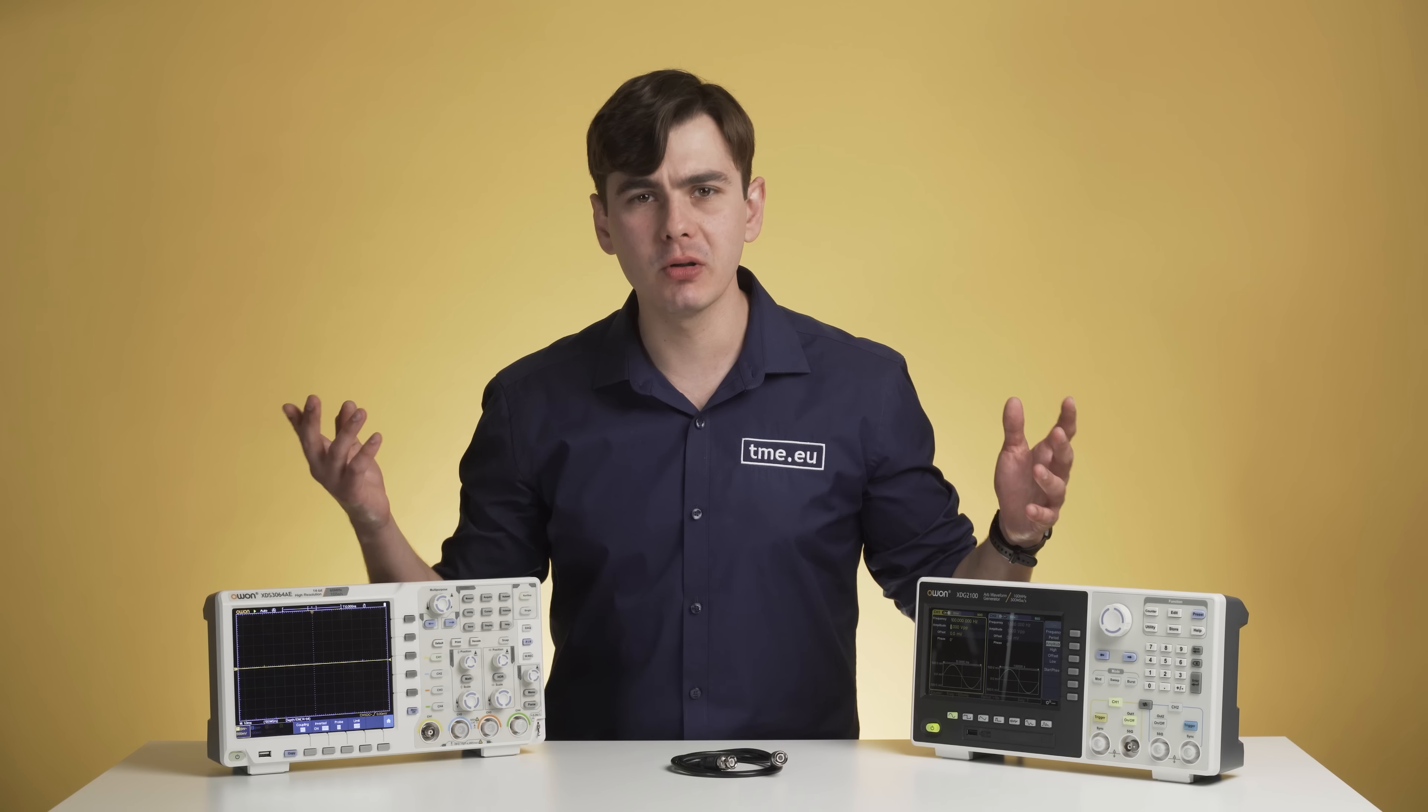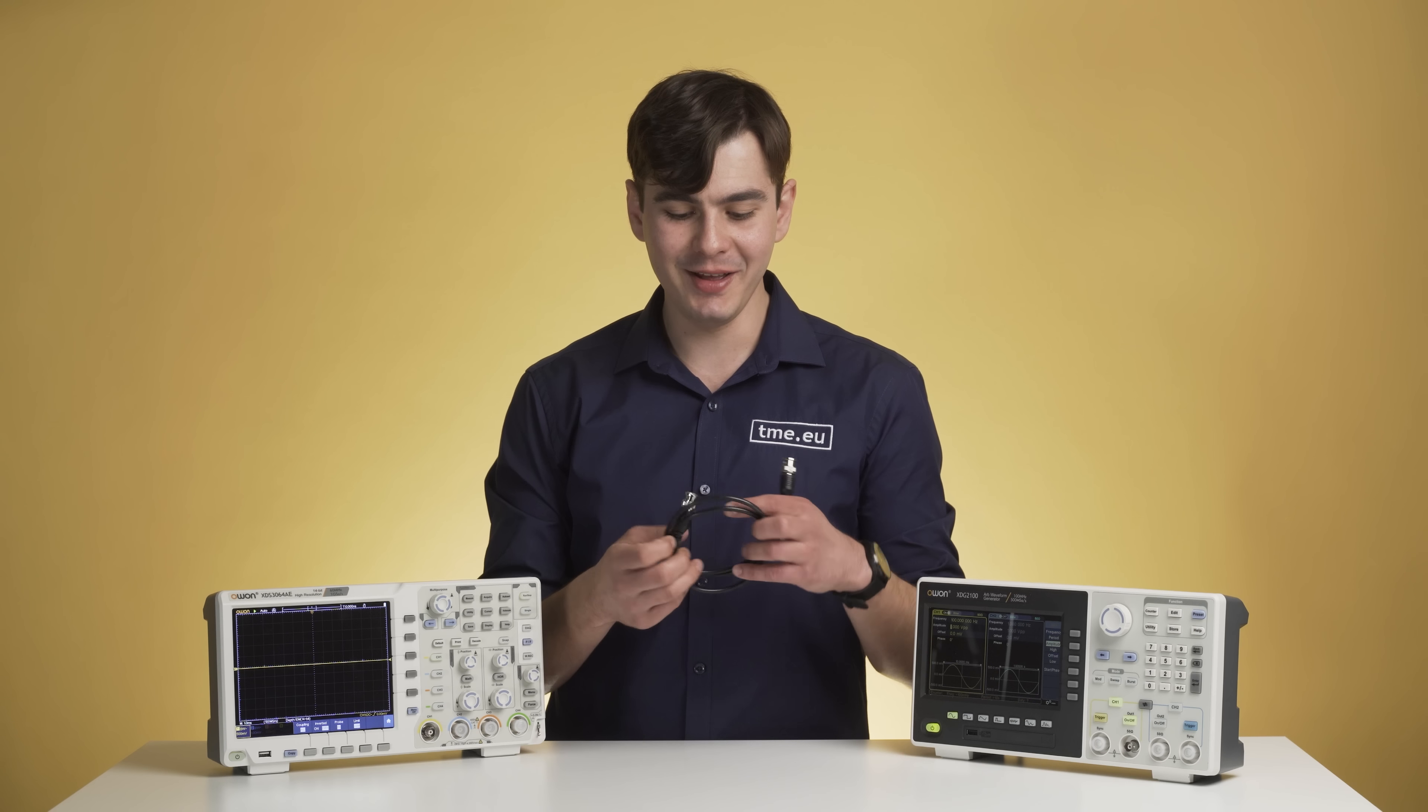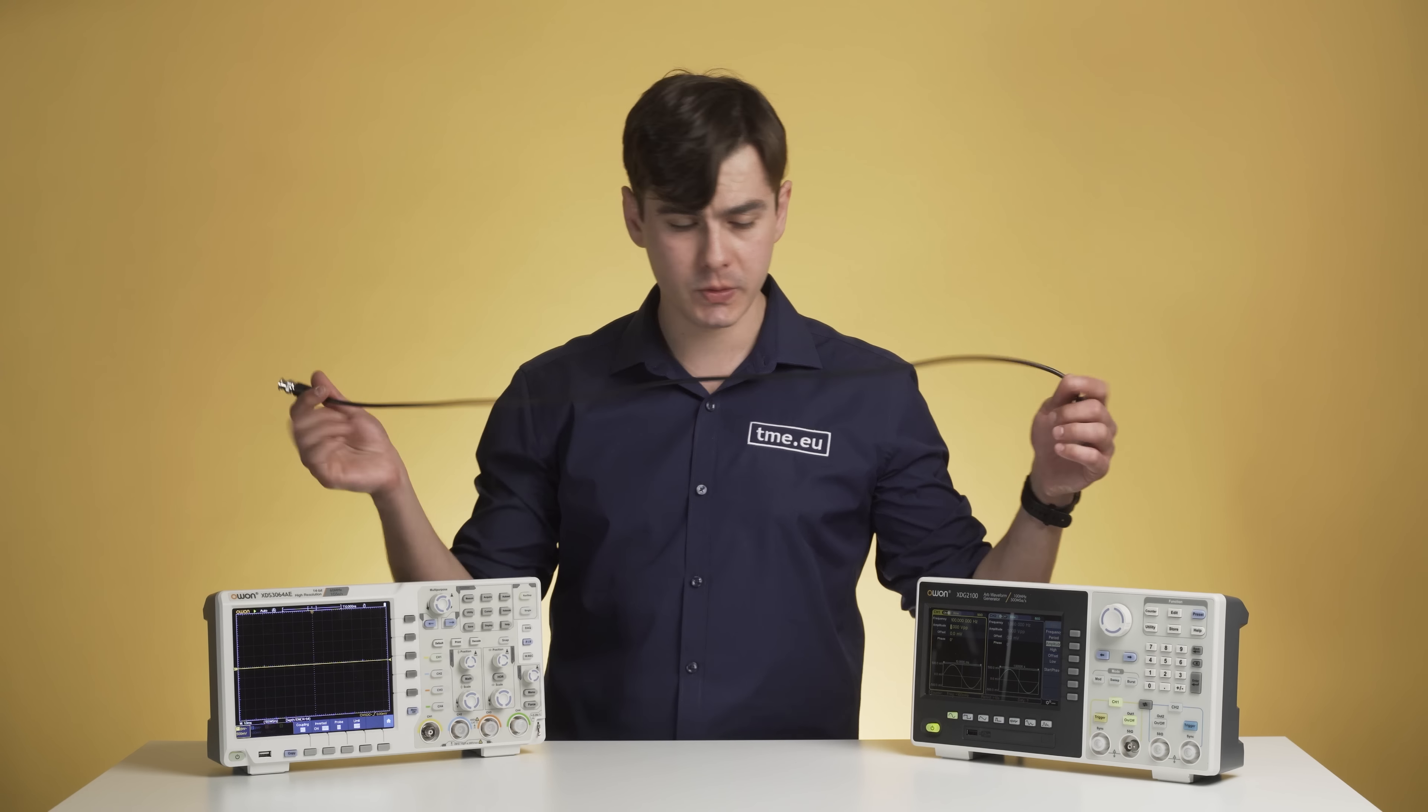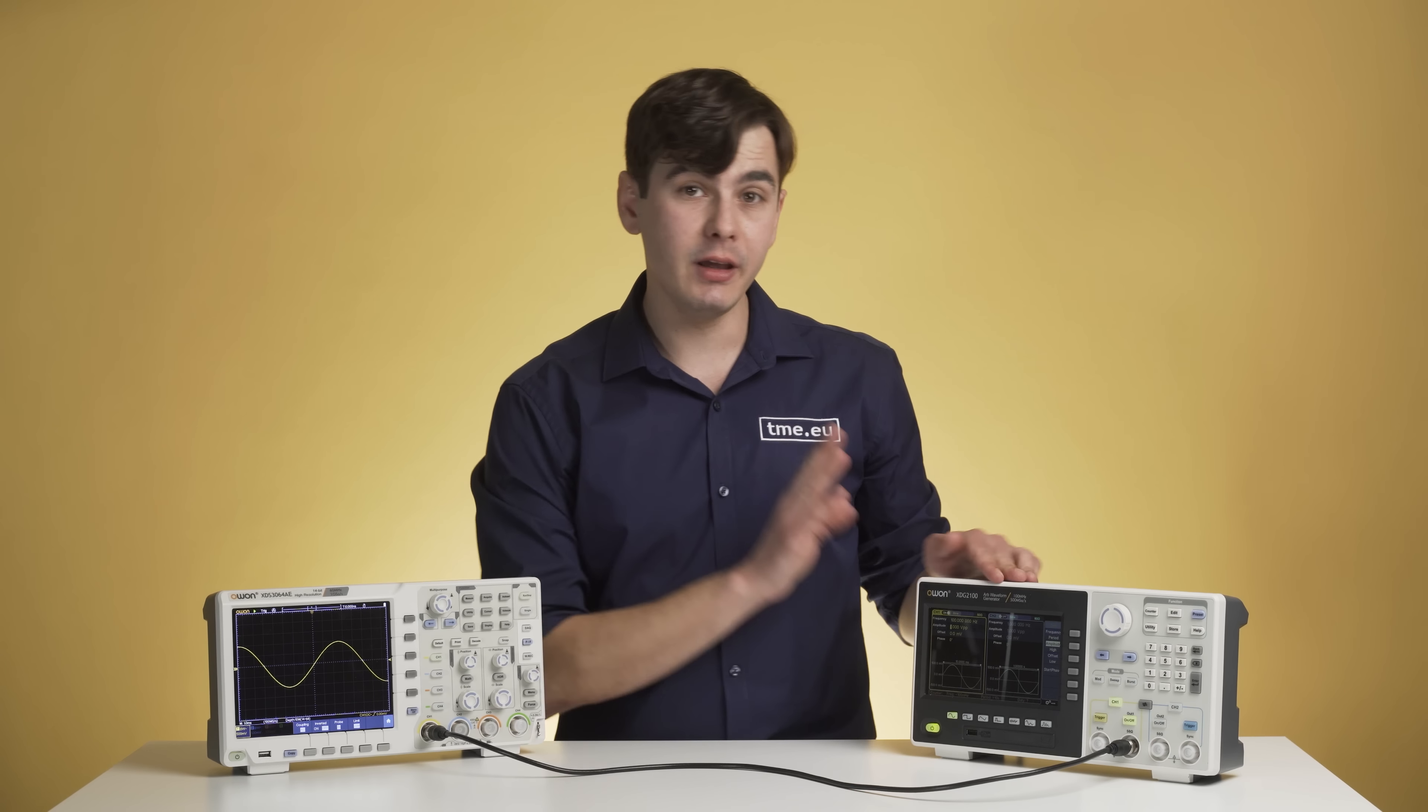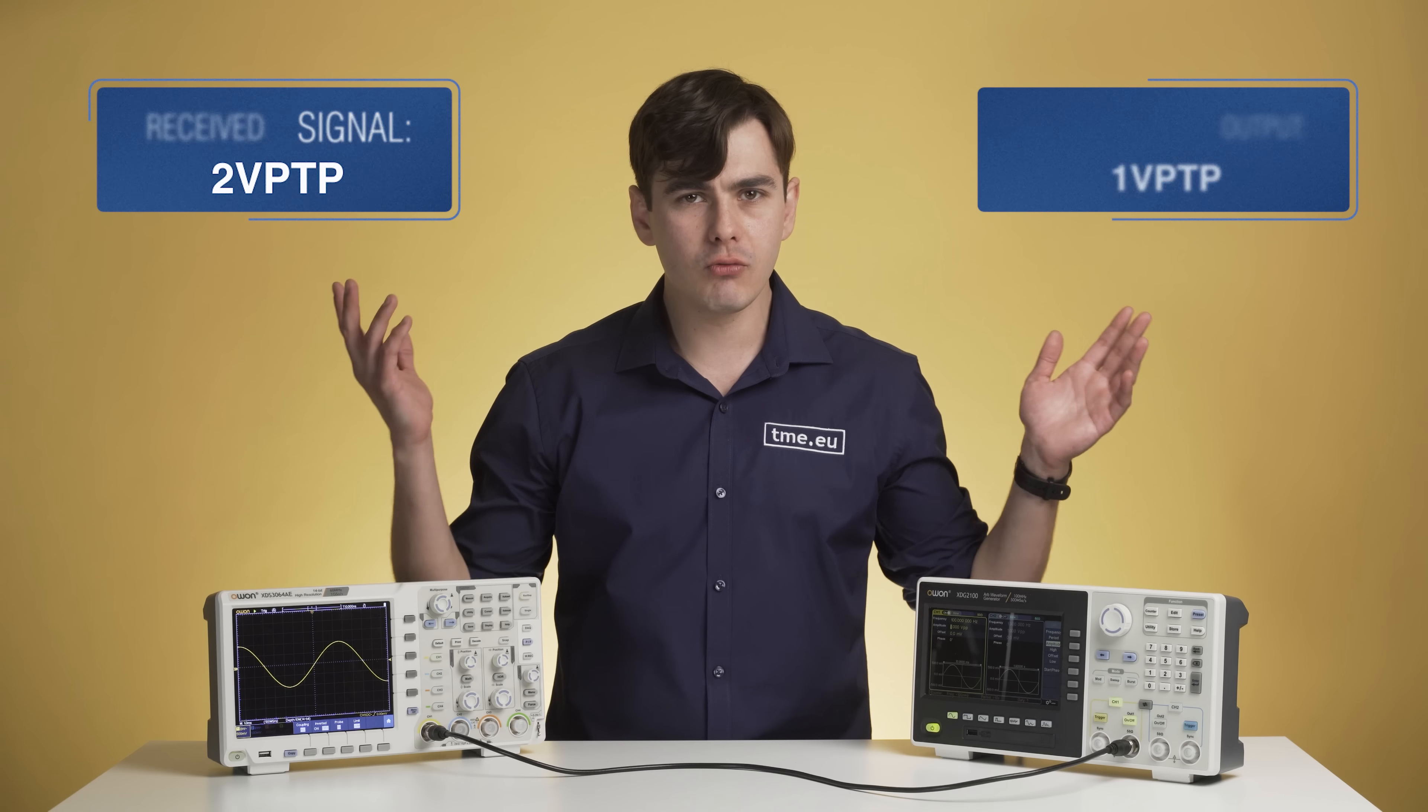If all this small talk about oscilloscope bores you, let's see if you can crack this. Here we have a function generator also from Owen, and you can hear this is a generator. Here we have a BNC to BNC cable. If we connect the two we should observe a pure sine wave without any problems. This one is already on and here we set it up to one volt peak to peak, but here we have two volts peak to peak. Hmm, what could be the problem?